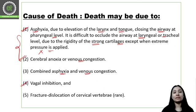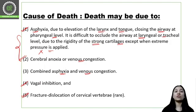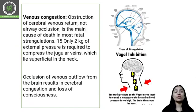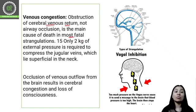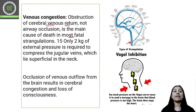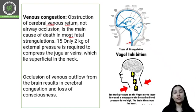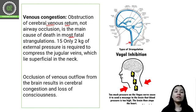Vagal inhibition is rarely seen, along with fracture or dislocation of the cervical vertebrae, as the pressure is usually not sufficient. Cerebral anoxia or venous congestion involves obstruction of cerebral venous return — it is not primarily occlusion of the airway. The jugular veins carry blood and oxygen to the brain, and if they get constricted, there is no supply of oxygen or blood to the brain, causing unconsciousness.